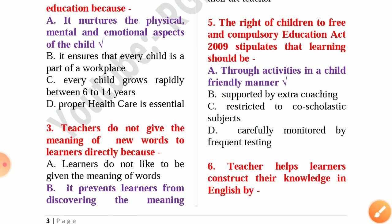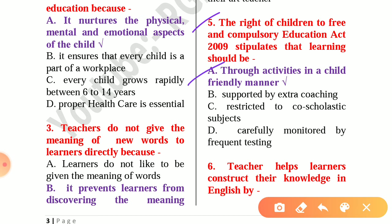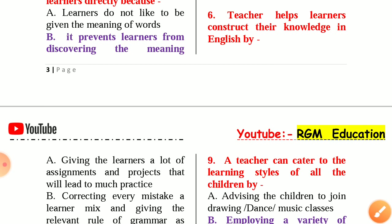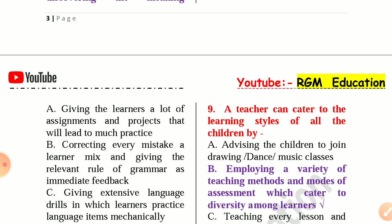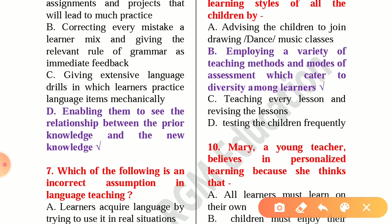Question number 5: The Right of Children to Free and Compulsory Education Act 2009 stipulates that learning should be through activities in a child-friendly manner. Number 6: Teacher helps learners construct their knowledge in English. The answer is option D: enabling them to see the relationship between the prior knowledge and the new knowledge.